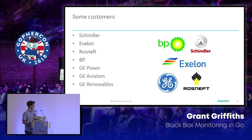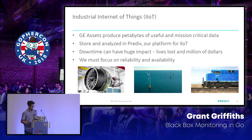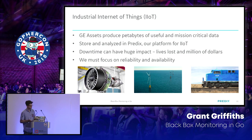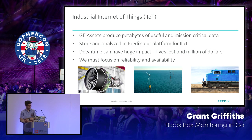Some of our customers include BP, Rosneft, and Exelon — big industrial customers. What we call this is the Industrial Internet of Things. We produce petabytes of useful and mission-critical data. Downtime can have a huge impact: we can lose lives, millions of dollars. So we really need to focus on monitoring and catch issues when they arise so they can be fixed as soon as they come up.